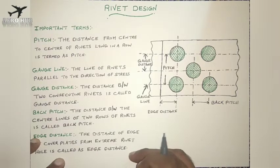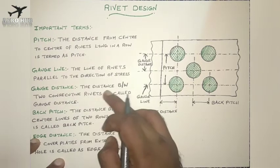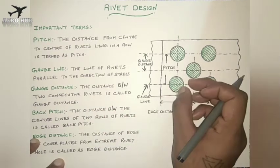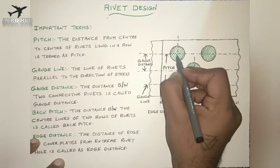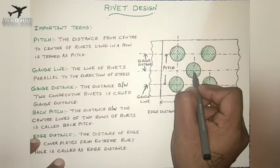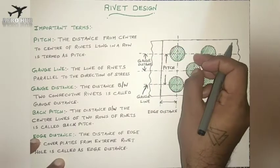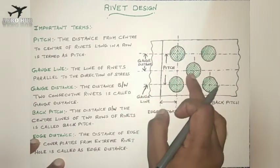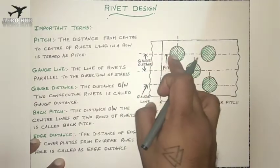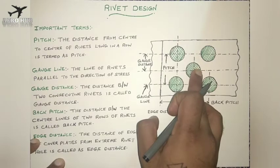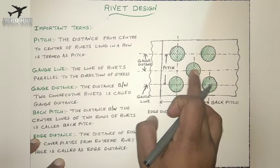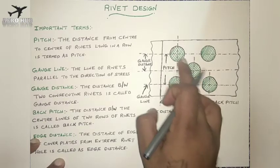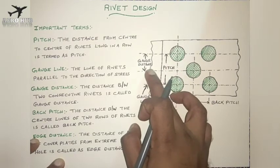The gauge distance is nothing but the distance between two consecutive rivets. You can see here this is one rivet and this is one more rivet — two consecutive rivets. The distance between the centers of these two consecutive rivets is called gauge distance.